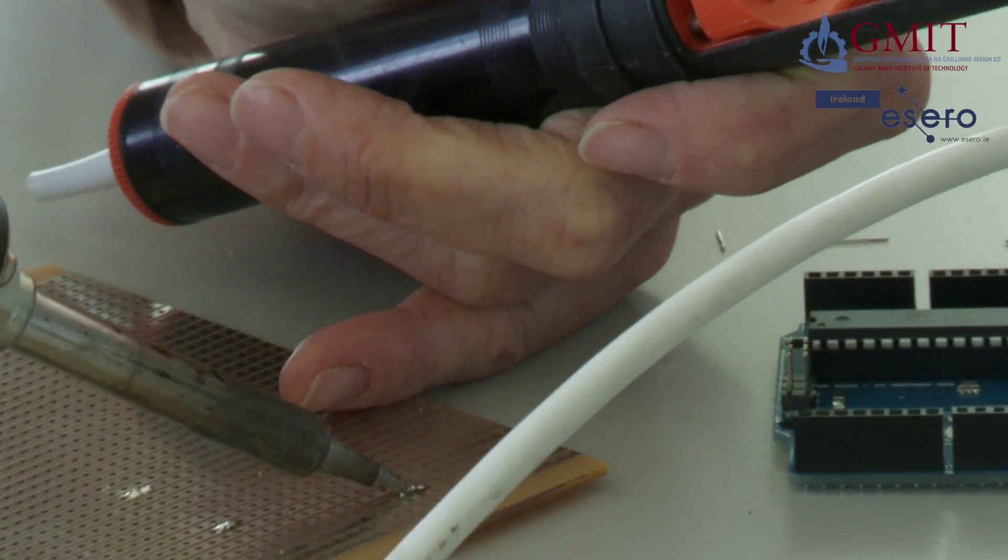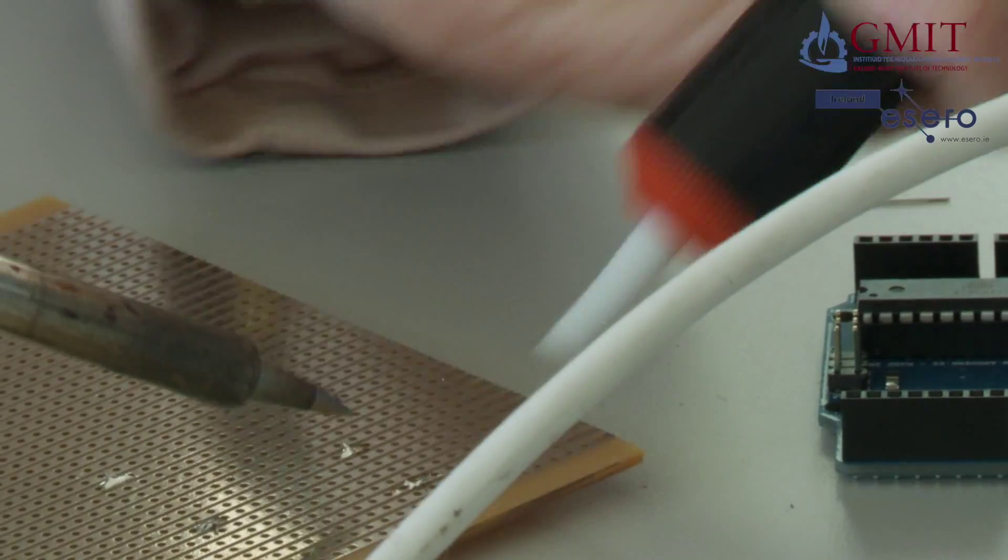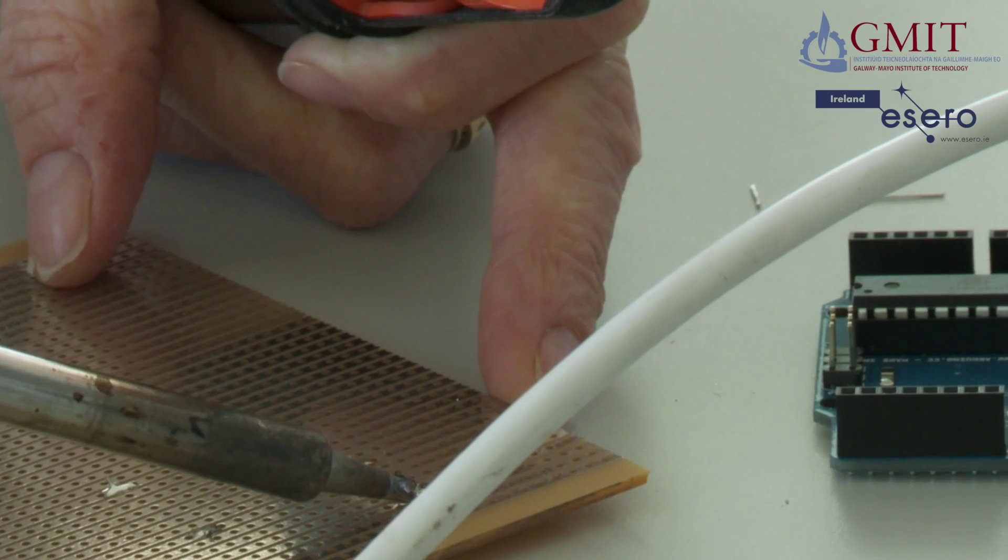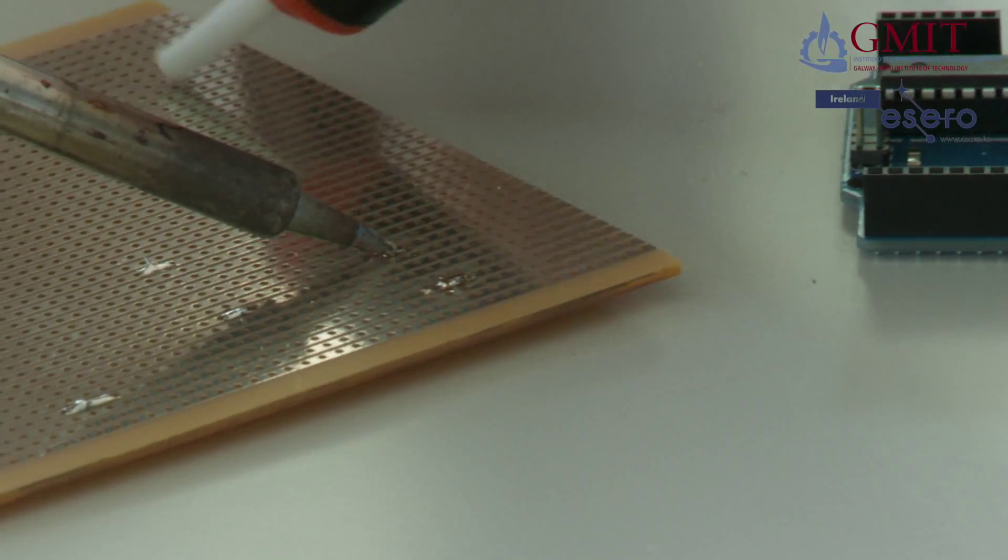So you can see there, it's beginning to melt. Then when you see that it's flowing nicely, bring in the solder remover. Hit the button and it removes the solder. So I'll do the other side of the joint, of the component.